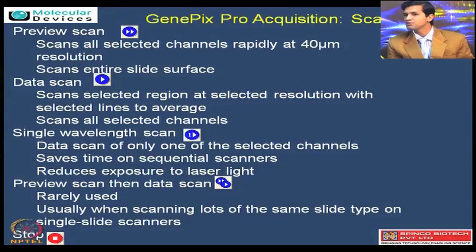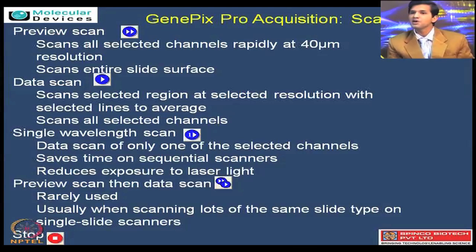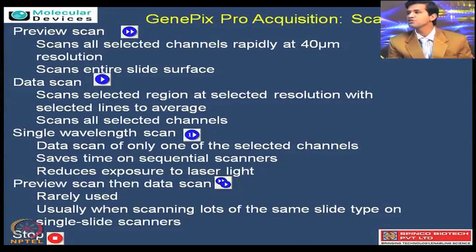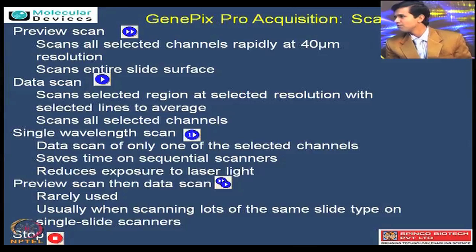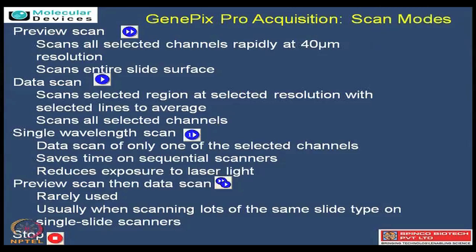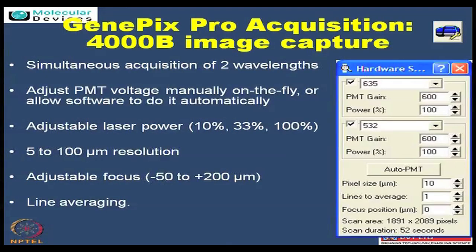For example, when you start with the preview scan, you decide on which best pixelation suits you and which laser power suits you. Once those decisions are made you can go for your data scan. People prefer this approach because there is sometimes a bleaching effect on the fluorophores, so they want to avoid longer exposure. Multiple scanning is avoided for this reason. If your application requires only one wavelength to be scanned, you can select only a single wavelength scan in the tab.